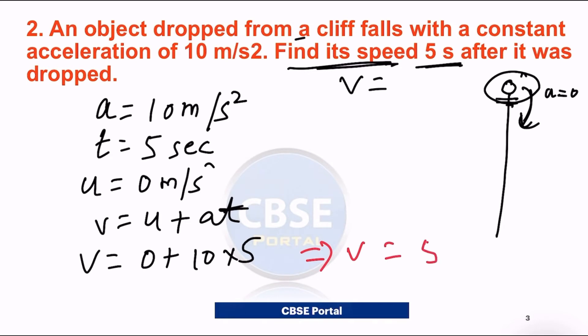So the final velocity of this object after 5 seconds is 50 meter per second. One thing to note is always pay attention to units. Sometimes time may be in minutes, or distance in kilometers instead of meters, so convert all units properly. I hope this question is also clear to you. Now let's look at the next question.